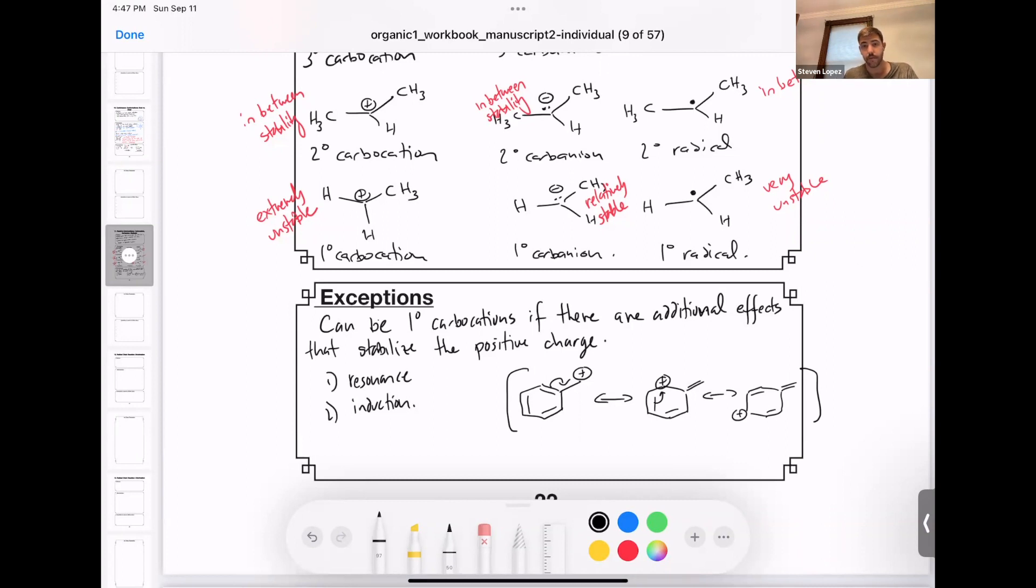Another way that we can have an induction-based stabilization of this charge is by adding electron-donating groups very near to the positive charge. So here's an example. If we added these isopropyl groups next to the carbon that is attached to the positive charge, these electron-donating groups, these alkyl groups, can actually push electron density into the ring and into that positive charge and stabilize this positive charge.